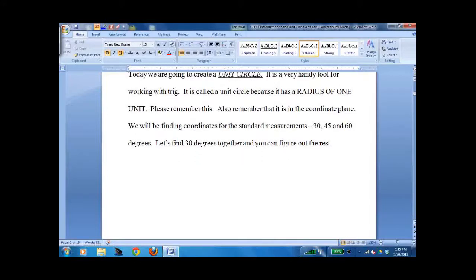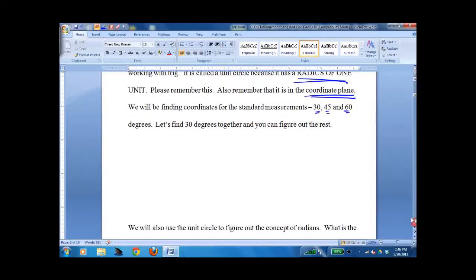So there's two big things to remember. Unit circle has a radius of one unit and it's on the coordinate plane. We look for all the 30, 45, 60 triangles in each quadrant. So I'll create the first quadrant and we will go from there.